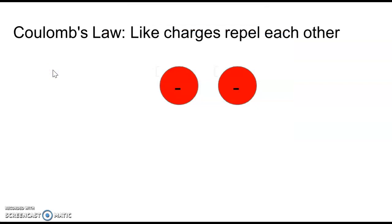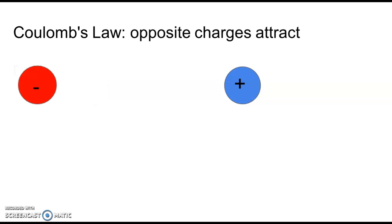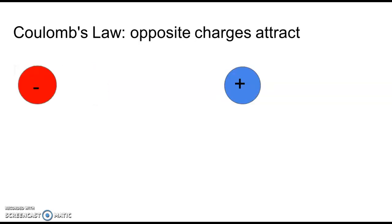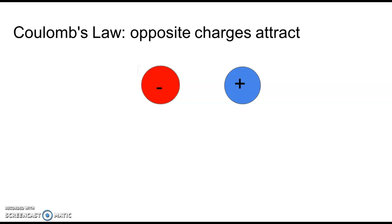Just a reminder of Coulomb's Law: like charges repel each other. I have here two negative particles, and if I move them along, you'll recognize that they are moving apart from each other — they repel each other. Now if I have opposite charges, where I have a negative and a positive charge, they actually attract each other and want to come together. This Coulomb's Law is essential in understanding how atomic radius actually gets smaller as atoms move across the periodic table.